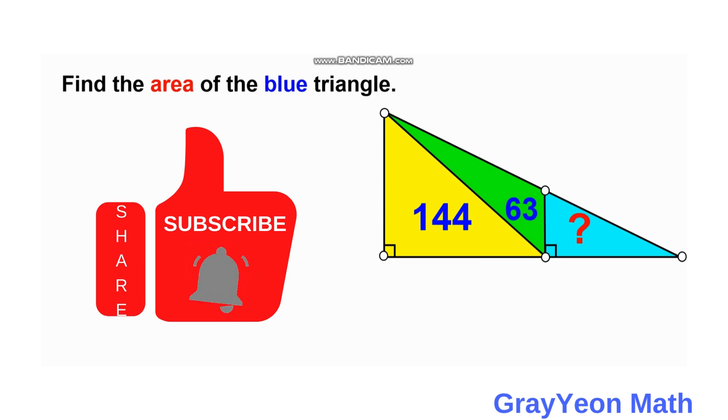Welcome to GrayYeon Math. We are asked to solve this problem. We have this right triangle subdivided into 3 portions. One portion is this yellow right triangle with an area of 144 square units, and this green triangle has an area of 63 square units. We are required to find the area of this blue right triangle.